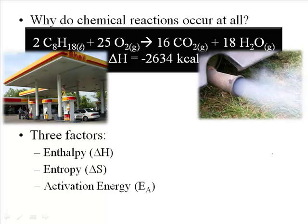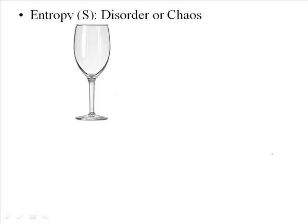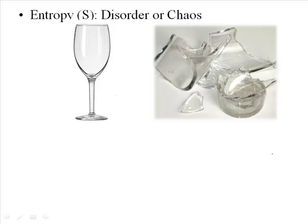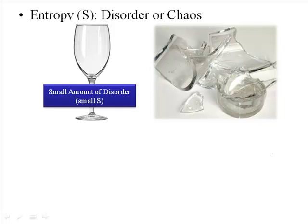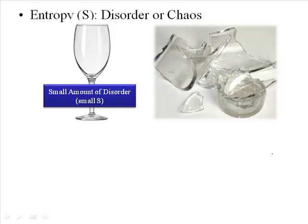Entropy is a little bit of an odd topic because it's actually a way of measuring the amount of disorder or chaos in any system or any substance. It's symbolized by a capital S, and it's easiest to think about this on a very conceptual level. Something like a perfectly put together glass would have a small amount of chaos associated with it, compared to that glass after it's broken. We can actually measure the amount of disorder associated with these two things. The intact glass has a small entropy — a small S value — whereas the broken glass has a larger S value.